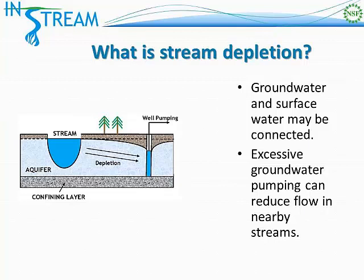And if there's a stream nearby, you can get into a situation in which water from the stream gets sucked into the aquifer and then pumped out of the well, which would obviously reduce the flow of water in the stream. This can happen because, in many situations, groundwater and surface water are connected. In situations like that, stream depletion can be an environmental concern.